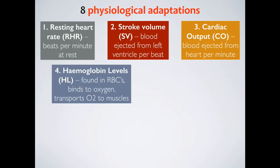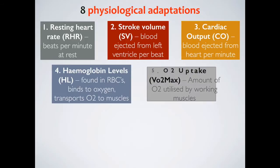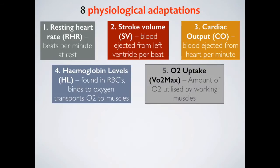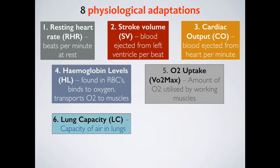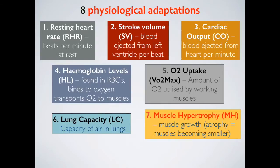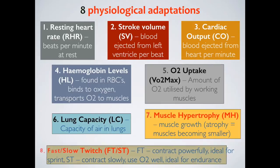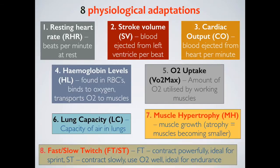The fourth is haemoglobin levels. Haemoglobin is found in red blood cells and binds to oxygen, transporting it to the muscles. The fifth is oxygen uptake, also known as VO2 max, defined as the amount of oxygen that can be utilised by working muscles. The sixth is lung capacity, defined simply as the capacity of air in the lungs. The seventh is muscle hypertrophy, which refers to muscle growth — the opposite of atrophy, which means muscles becoming smaller.